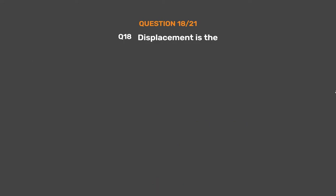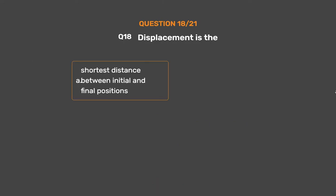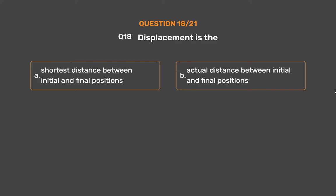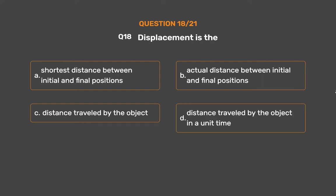Question No. 18. Displacement is the: Option A: Shortest distance between initial and final positions. Option B: Actual distance between initial and final positions. Option C: Distance travelled by the object. Option D: Distance travelled by the object in a unit time.